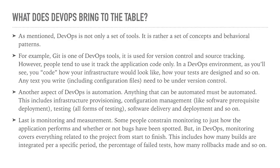Last is monitoring and measurement. Some people constrain monitoring to just how the application performs and whether bugs have been spotted. However, in DevOps, monitoring covers everything related to the project from start to finish — including how many builds are integrated per a specific period, the percentage of failed tests, how many rollbacks were made, and so on.